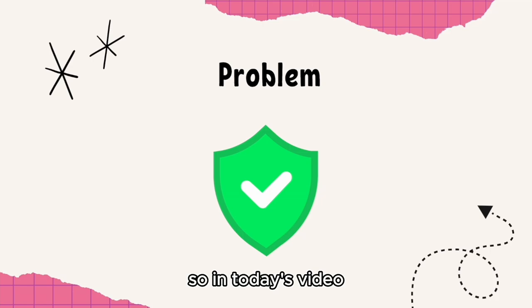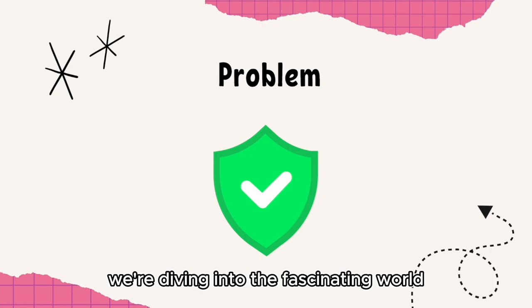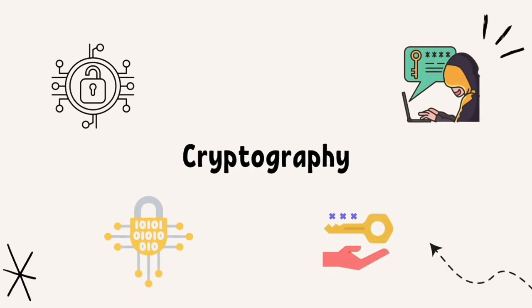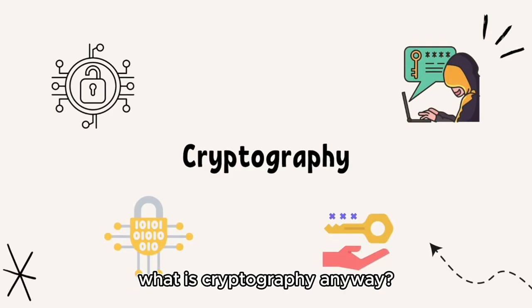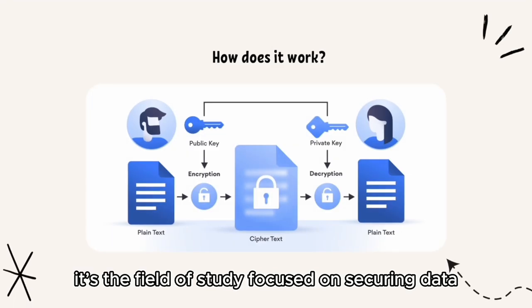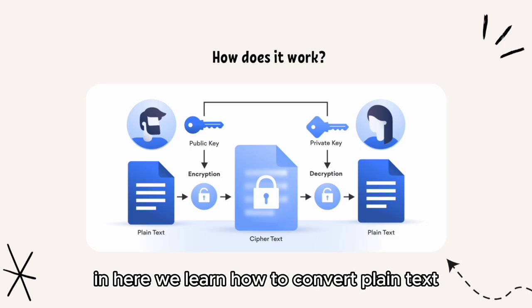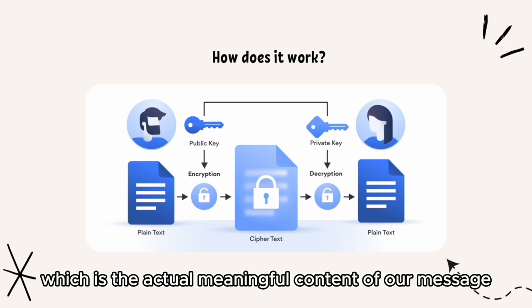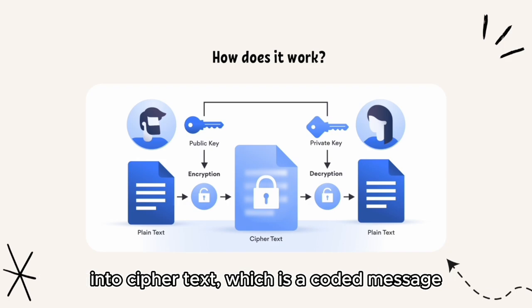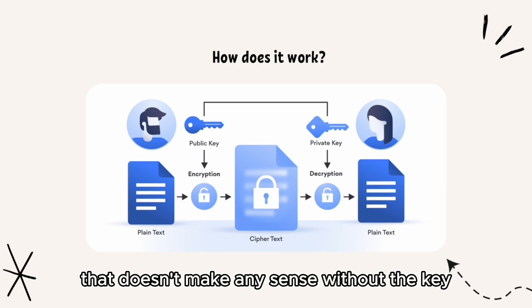That's why it is so important to know how to keep our communication private and secure. So in today's video, we're diving into the fascinating world of cryptography. What is cryptography? In simple terms, it is the field of study focused on securing data or messages. Here, we learn how to convert plain text — the actual meaningful content of our message — into cipher text, which is a coded message that doesn't make any sense without the key.